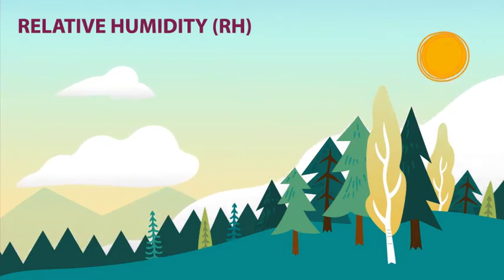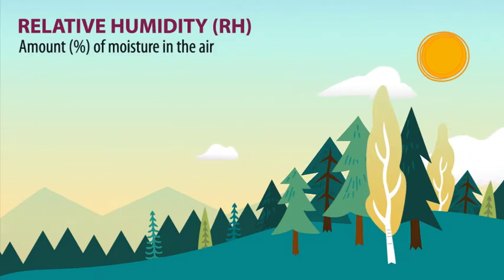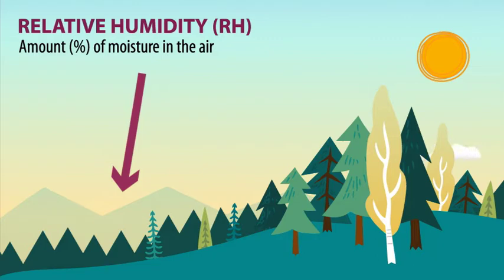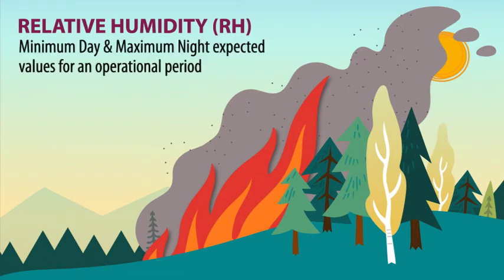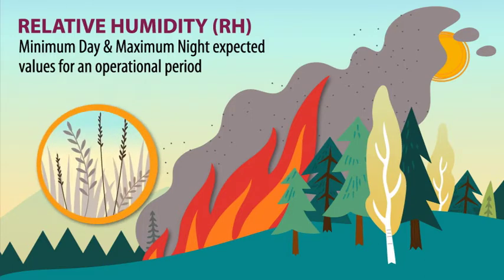The relative humidity, or RH, expressed as a percent, is very simply the amount of moisture in the air. Low values of RH can help to dry the fuels, which may then lead to an increase in fire behavior. The forecast for RH will show the minimum expected value for a day operational period and the maximum value for a night operational period. Fine-dead fuels, or one-hour fuels, are most sensitive to hourly and daily changes in RH. Like temperature, you may see trend values or values for differing elevations here as well.